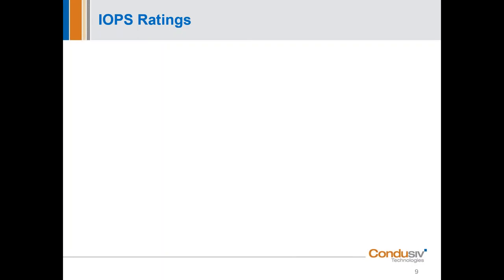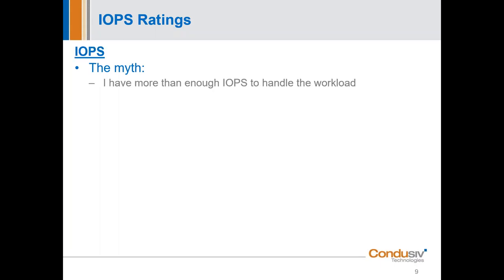I want to discuss what I would like to term the two IO fallacies. The first is the IOPS fallacy. The myth is that 'I have more than enough IOPS to handle the workload.' Maybe you've got an all-flash SAN with 600,000 IOPS — which is actually a real use case we had. They had an all-flash Pure SAN with 600,000 IOPS and only 11 physical servers attached to it because the workloads were so heavy and they were really missing their SLAs.